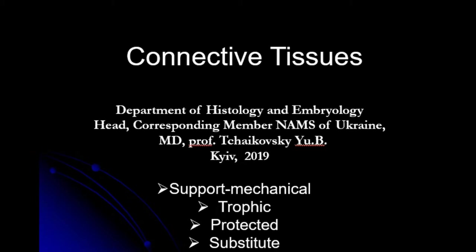The ground substance is like a fluid part of the extracellular matrix. The basic components of the ground substance are water and different soluble and insoluble components — organic and inorganic substances. And the fiber structures are fibers of different size and length, which can be of different types: collagen fibers, elastic fibers, and reticular fibers.